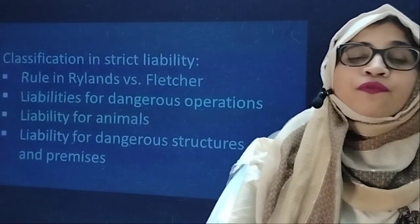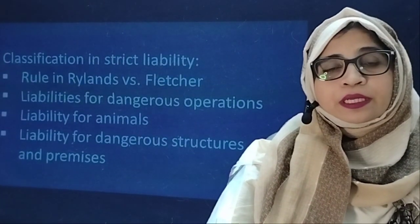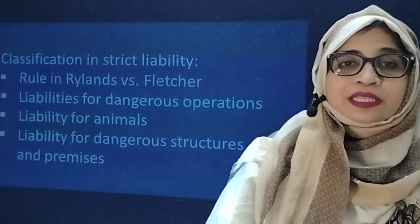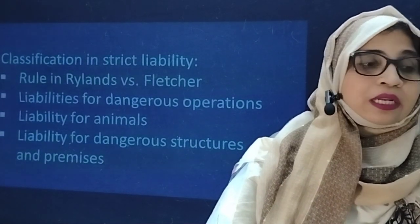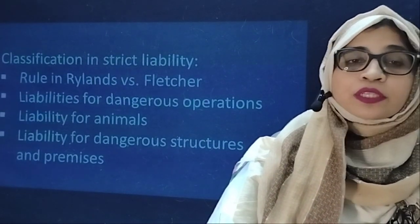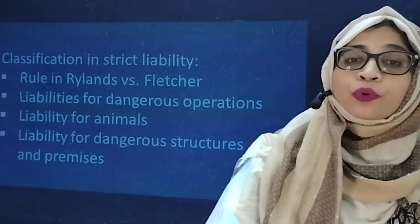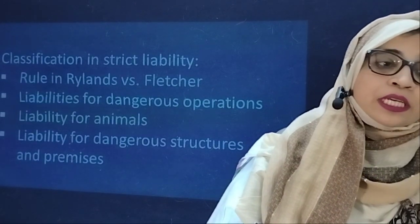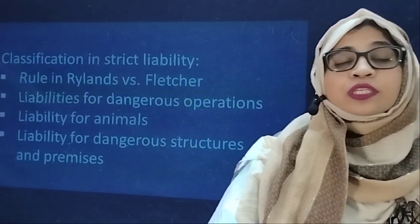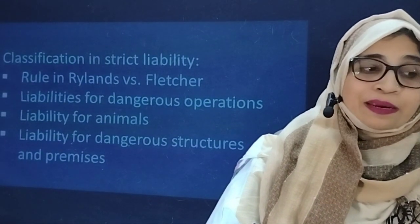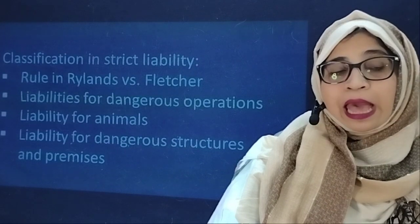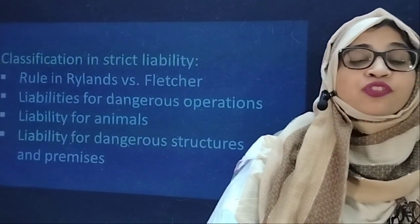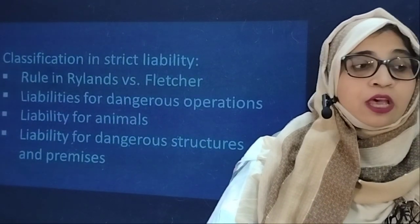Now we will go to the classifications of strict liability. The various classifications are: first, the rule in Rylands versus Fletcher and liabilities for dangerous operations; next, liabilities for animals; and liabilities for dangerous structures and premises.